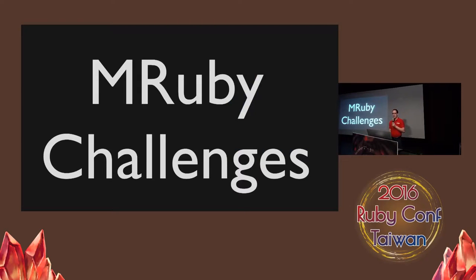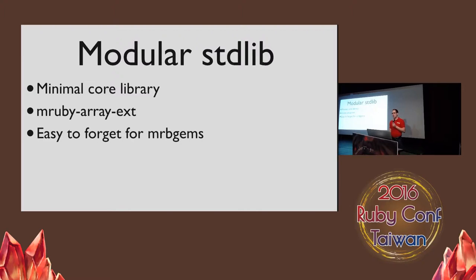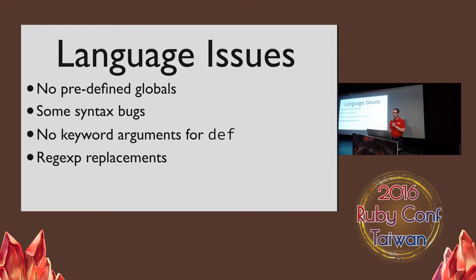When I first heard about mruby and mruby CLI, I thought it sounded pretty easy, but I was sure there would be some challenges. The first is that mruby is not exactly the same as CRuby. The first problem I had was the modular standard library. mruby's core library has classes like array, hash, and string, but they only support a minimum number of methods. To get the full CRuby experience, you need an extension gem like mruby-array-ext. It's easy to forget to add these gems if you're developing your own mruby gem, so your gem won't work if you try to include it in another project. mruby also has a smaller language outside the standard library — there are no predefined globals such as load path, since everything is compiled in.